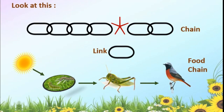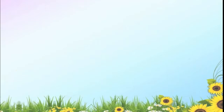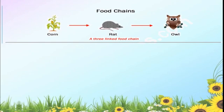This is called a food chain because the grasshopper feeds on the grass and the bird feeds on the grasshopper — each one is a link. Here is also a food chain: this is a corn plant, corn is the food for the rat, and the rat is the food for the owl. All three are linked and connected to each other for food. So this is called a food chain.